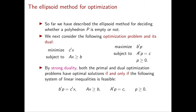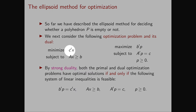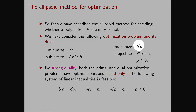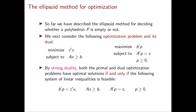Let's say that the linear programming problem we want to solve is: minimize C transposed X subject to AX greater than or equal to B. We write down the dual of our linear programming problem, which is: maximize P transposed B subject to A transposed P equal to C and P greater than or equal to 0.